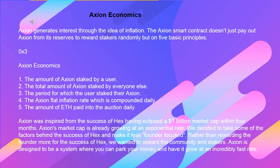Axion Economics: 1. The amount of Axion staked by a user. 2. The total amount of Axion staked by everyone else. 3. The period for which the user staked their Axion. 4. The Axion flat inflation rate, which is compounded daily. 5. The amount of ETH paid into the auction daily.